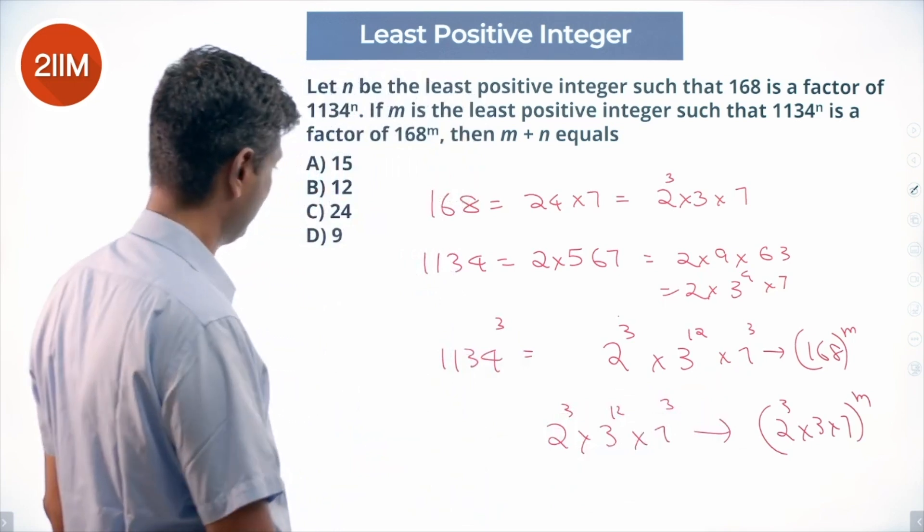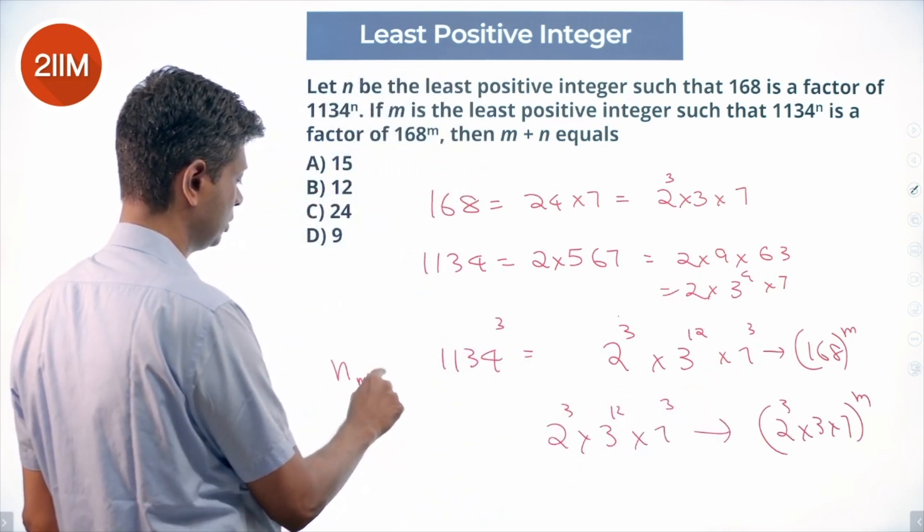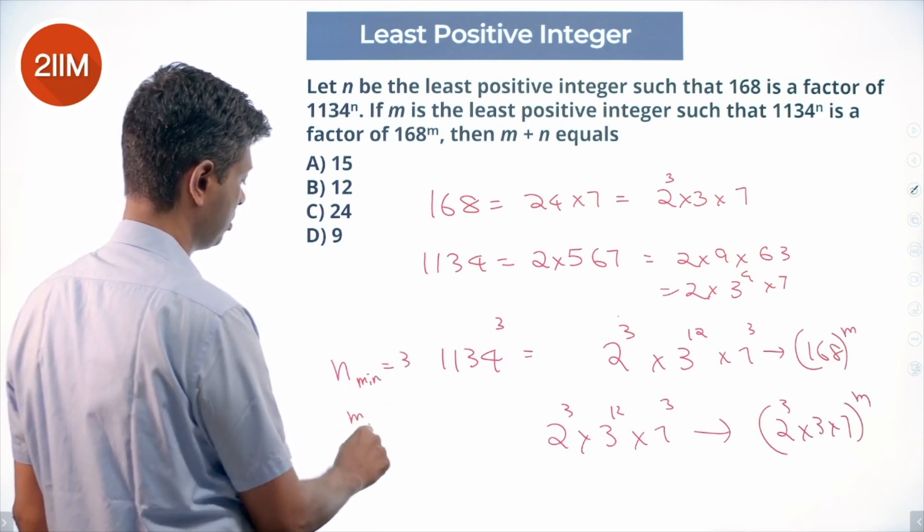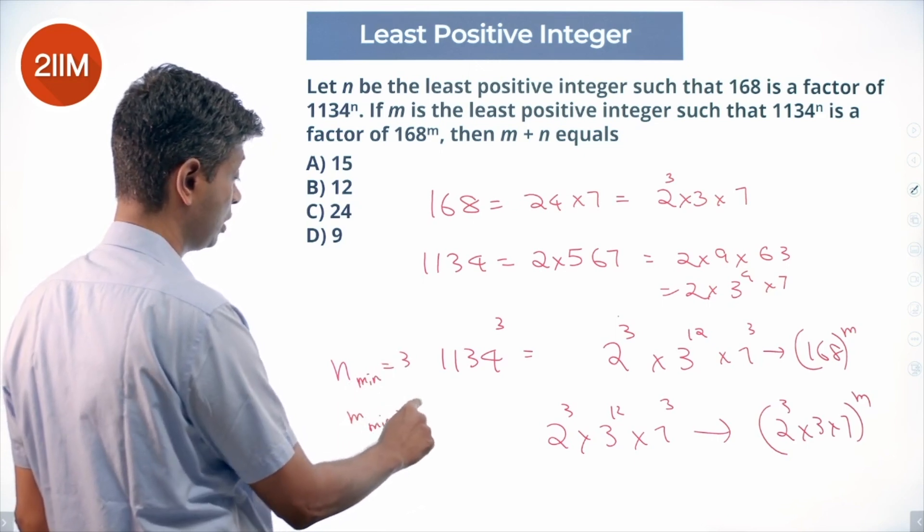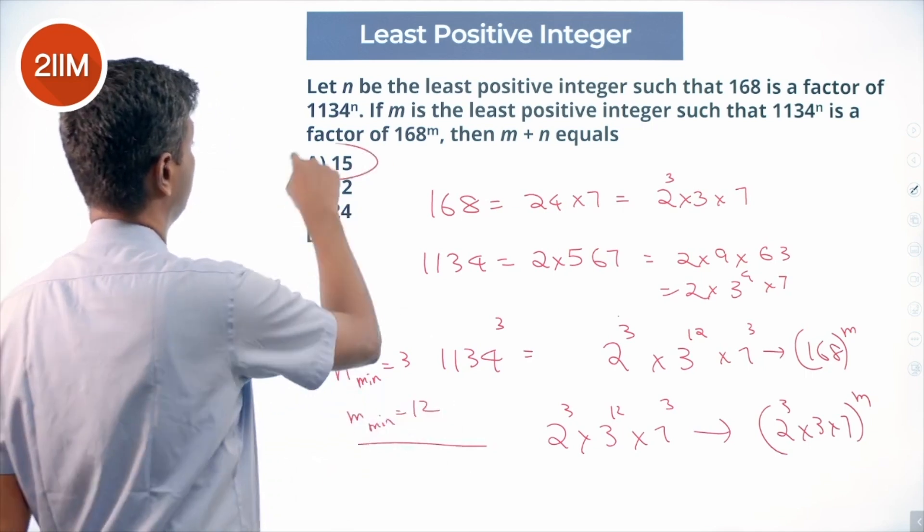Minimum value of n is 3. m minimum is 12. The minimum value m plus n is 15.